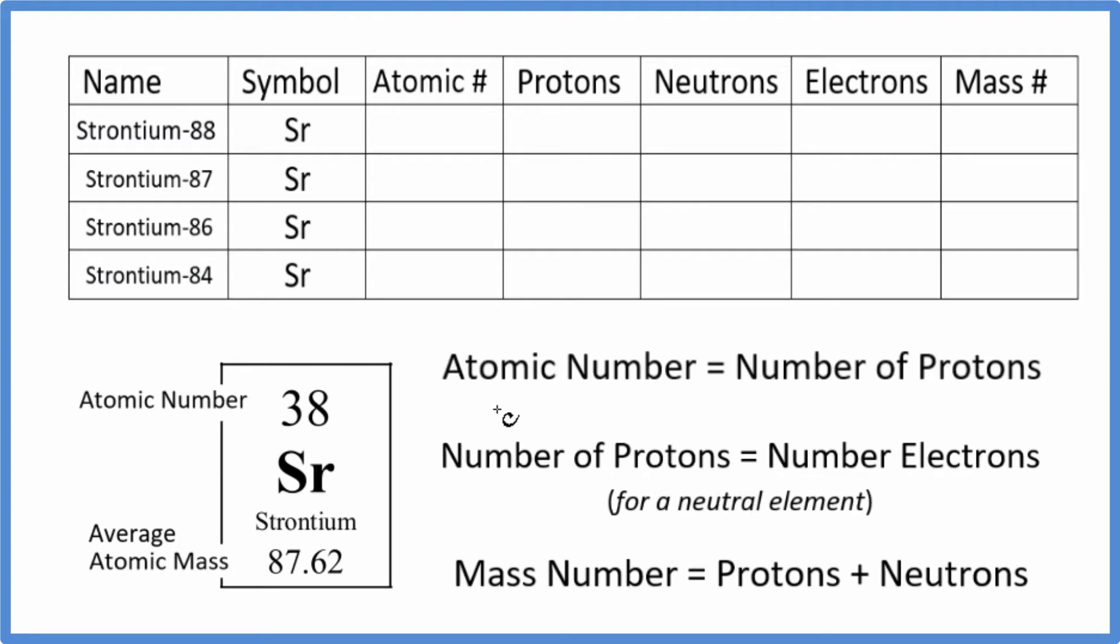So first off, we want to find the atomic number. This number right here, that's the atomic number for strontium. So we just write 38 in for all of these because 38, that's what makes it strontium. That's its identity.